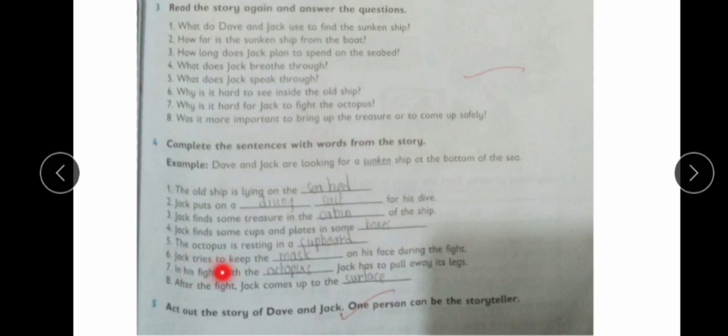Jack tries to keep the dash on his face during the fight. Jack was making his mask. The oxygen mask. In his fight with the dash, Jack has to pull away its legs. Who was that? With the octopus. After the fight, Jack comes up to the dash. Jack came up to the surface.